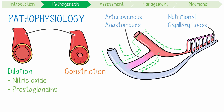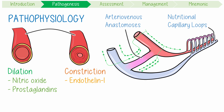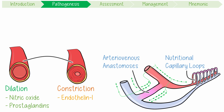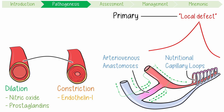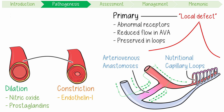In contrast, endothelin-1 is a potent vasoconstrictor and is only released during an abnormal vascular response in secondary forms of Raynaud's phenomenon. The cause of primary RP is thought to be a local defect in the affected part of the peripheral circulation. Patients have abnormal adrenergic receptors or locally dysregulated endothelial responses in their digits. They exhibit reduced digital blood flow via AVAs, but flow is preserved in the nutritional capillaries.